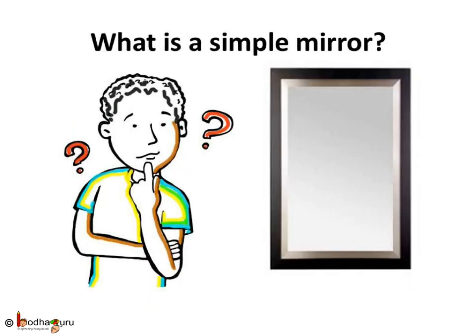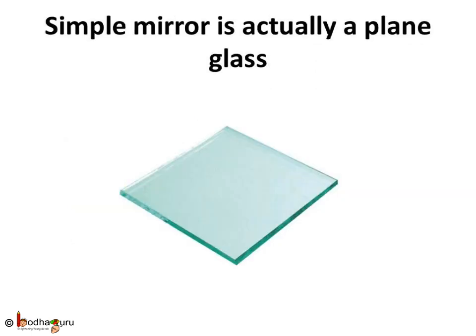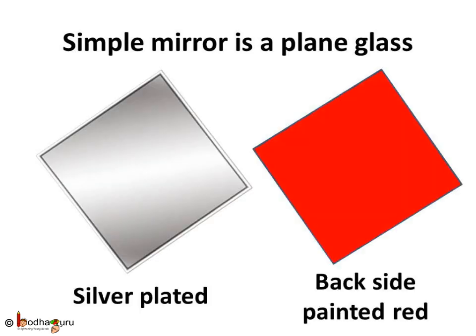What is a mirror actually? Can we make a simple mirror? Yes, we can. Actually, it is a plain glass which is silver plated. The plain glass provides the smooth surface, and the silver coating makes it shining. How to prevent light going through the mirror? Well, behind the silver coating there is also red paint. The red paint also protects the silver coating from getting scratched. Interesting to know and simple too, isn't it?